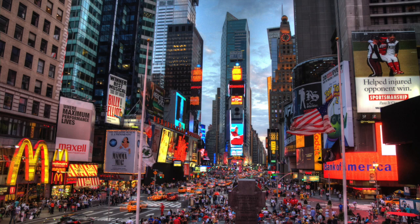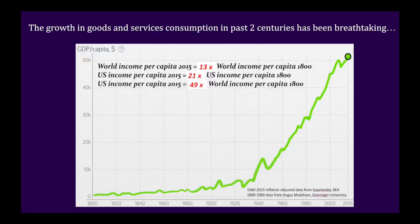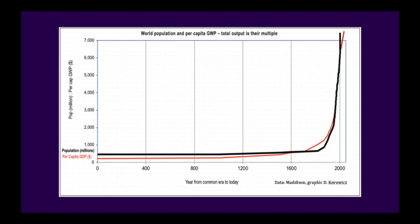Looked at from an economic lens, the benefits from industrialization in the past two centuries have been breathtaking. Measured by consumption of goods and services, human wealth increased over 13 times for the average human and 21 times for the average American since the year 1800. In fact, if you combine this per capita increase with our population increase now at 7.6 billion humans, the scale of the human economy is now 400 times larger than it was just 500 years ago.